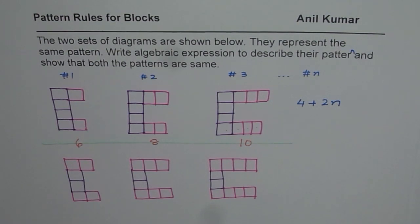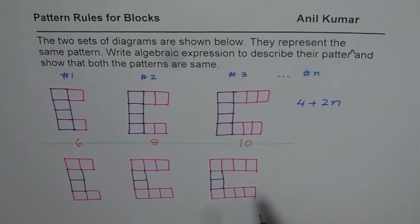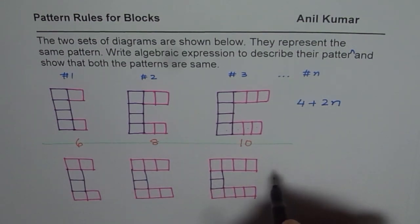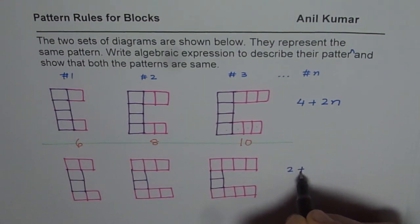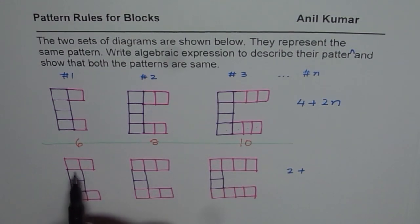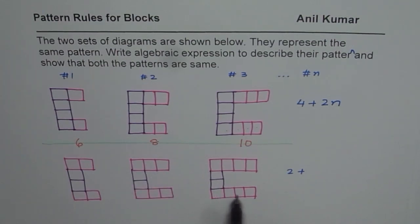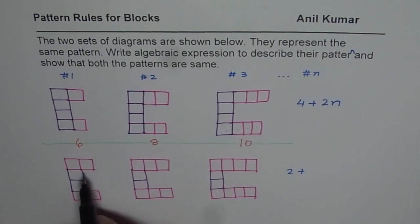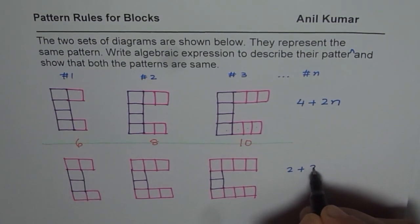I'd like you to pause the video and apply your strategy to find the equation for the second block. Let's think about it. Here the fixed number of blocks, as you can see, is 2. So we'll start with 2 plus something. Now what is changing? We have 3 and 4, then 3 and 3 giving 6, then 8. So 4 is 2 sets of 2. Do you get my point? So it is 2 sets.